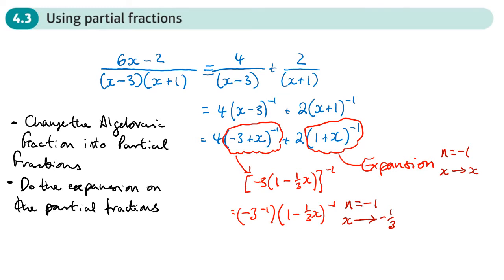Watch out for improper algebraic fractions, where you would need to do polynomial long division first to get the quotient out before doing partial fractions on the remainder over the divisor. Take the same steps you were doing in chapter one.